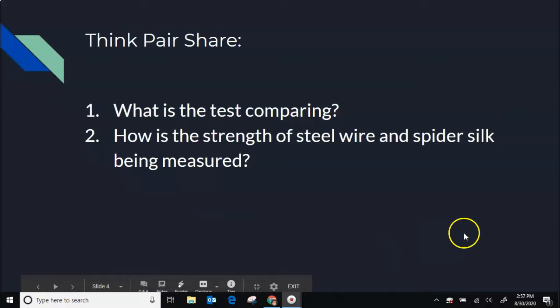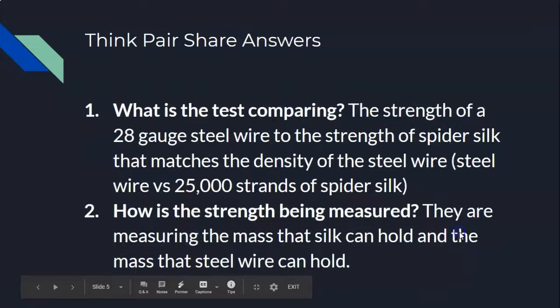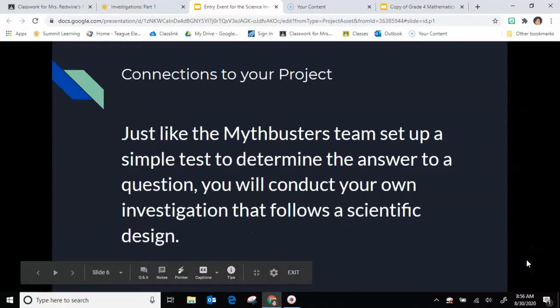Now that you're finished with that in Google Classroom, let's look at some of the answers. Number one: what is the test comparing? It was comparing the strength of a 28 gauge steel wire to the strength of spider silk that matches the density of the steel wire—steel wire versus 25,000 strands of spider silk. Number two: how is the strength being measured? They're measuring the mass that silk can hold and the mass that steel wire can hold, to see which one holds the most.